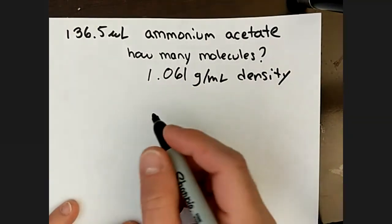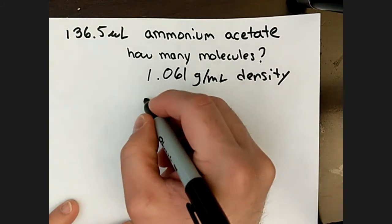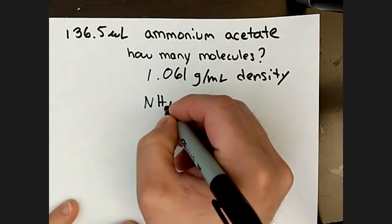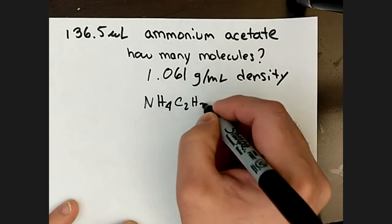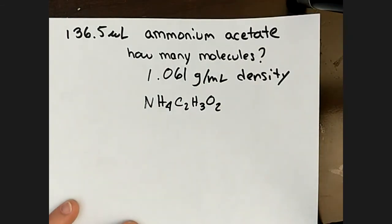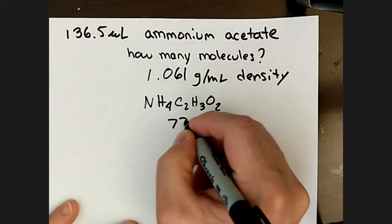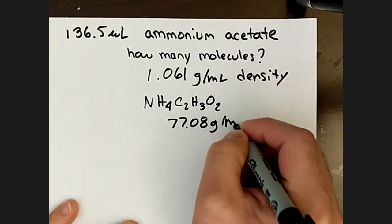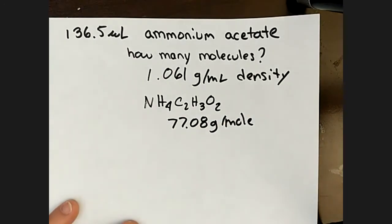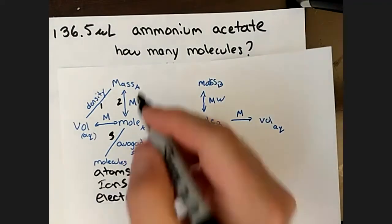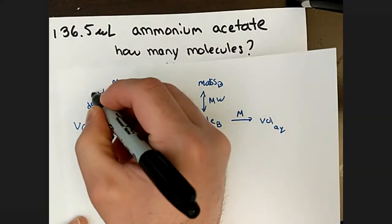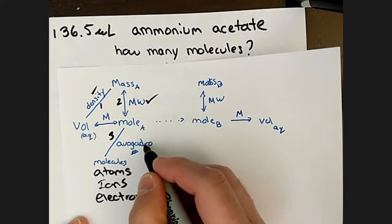We need to know ammonium acetate — you need to know how to put the formula together and then calculate the molecular weight. So we have a whole bunch of numbers, but most come from our flowchart: the molecular weight, the density, and Avogadro's number as a constant.